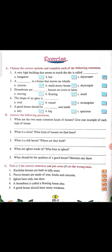Let's go to exercise C — tick the correct sentences and put a cross on the wrong ones. Here the first is wrong, we will put a cross. Here we will put a cross. This is right, we will put a tick. Third: the igloo has only one door — this is right, we will put a tick. Fourth: houseboats, which are called floating houses — this is right, we will put a tick. Fifth: a good house should have many windows — this is right, we will put a tick.